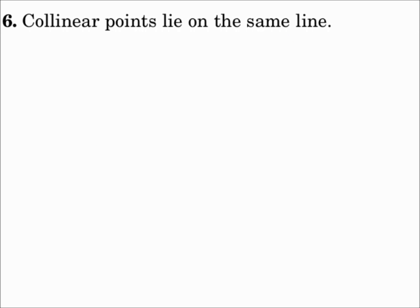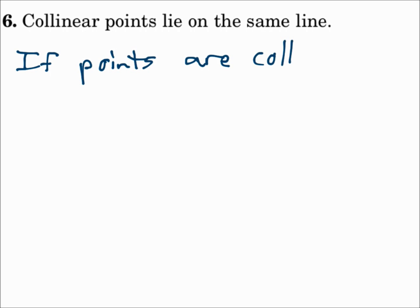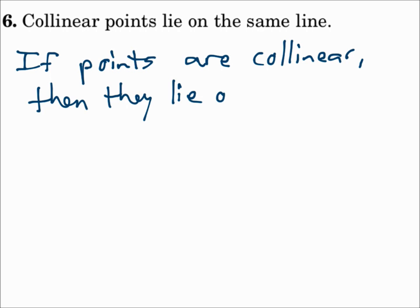Number 6: Collinear points lie on the same line. Are points collinear because they lie on the same line, or do they lie on the same line because they're collinear? The best way to write this is: if points are collinear, then they lie on the same line.